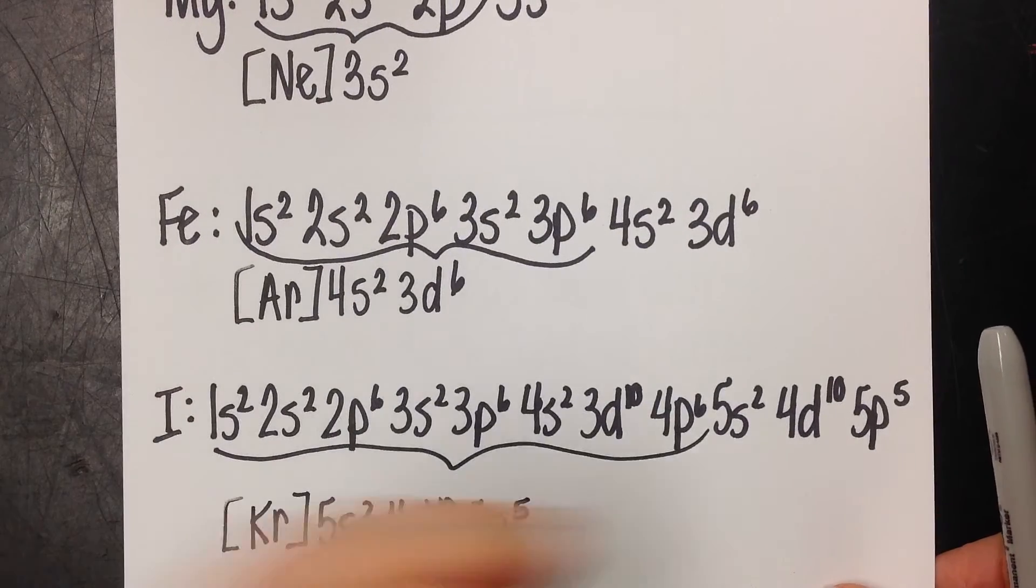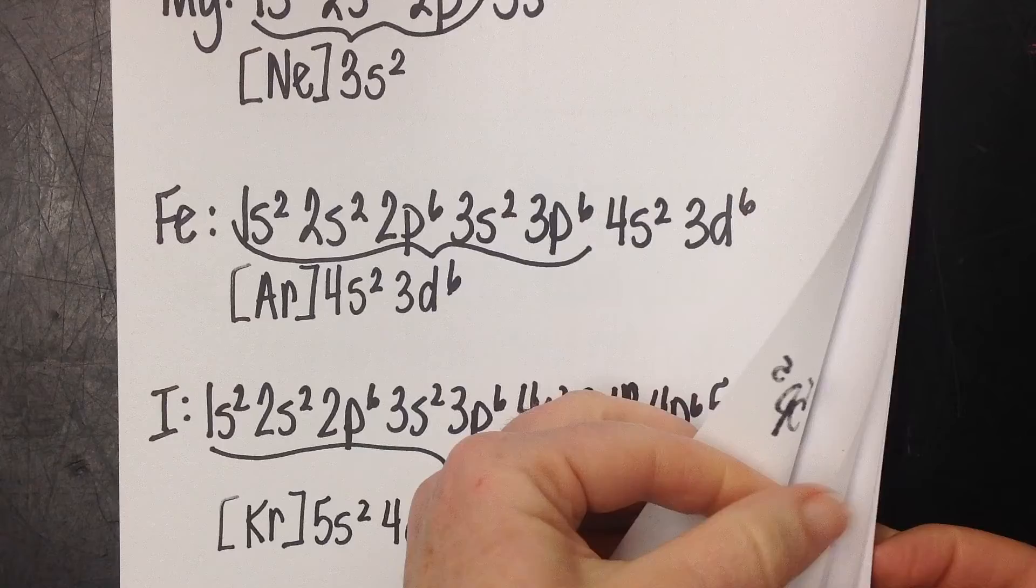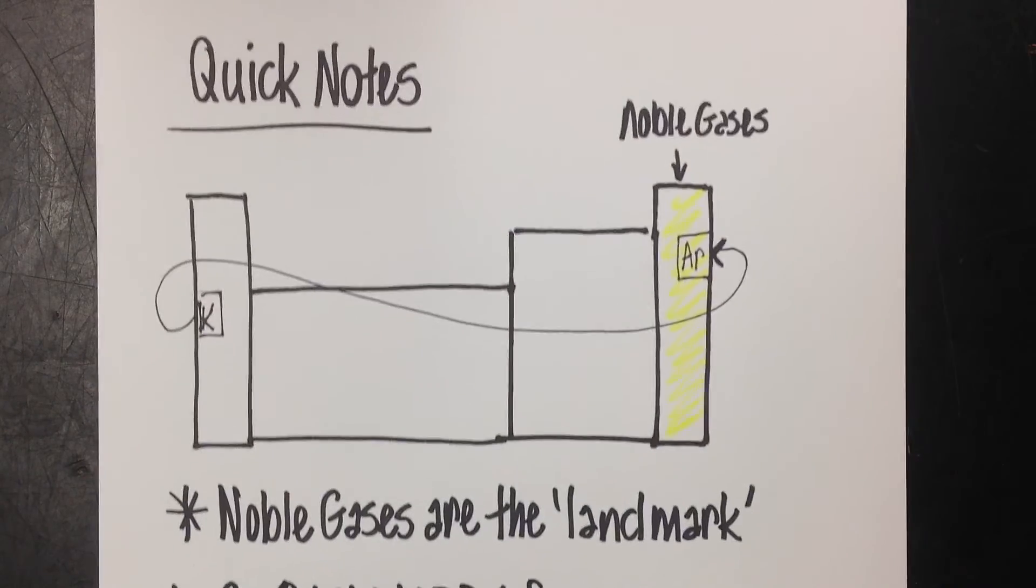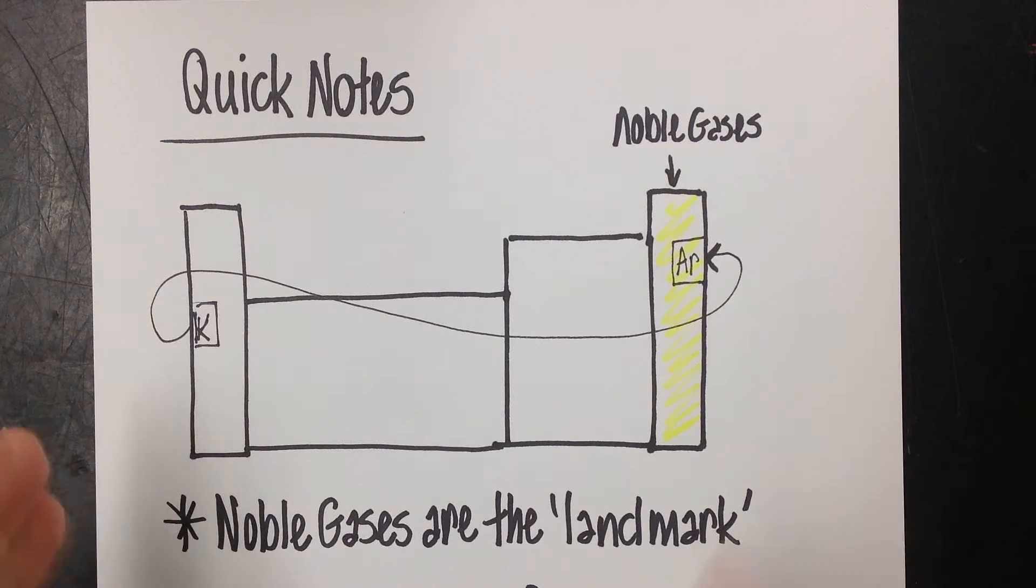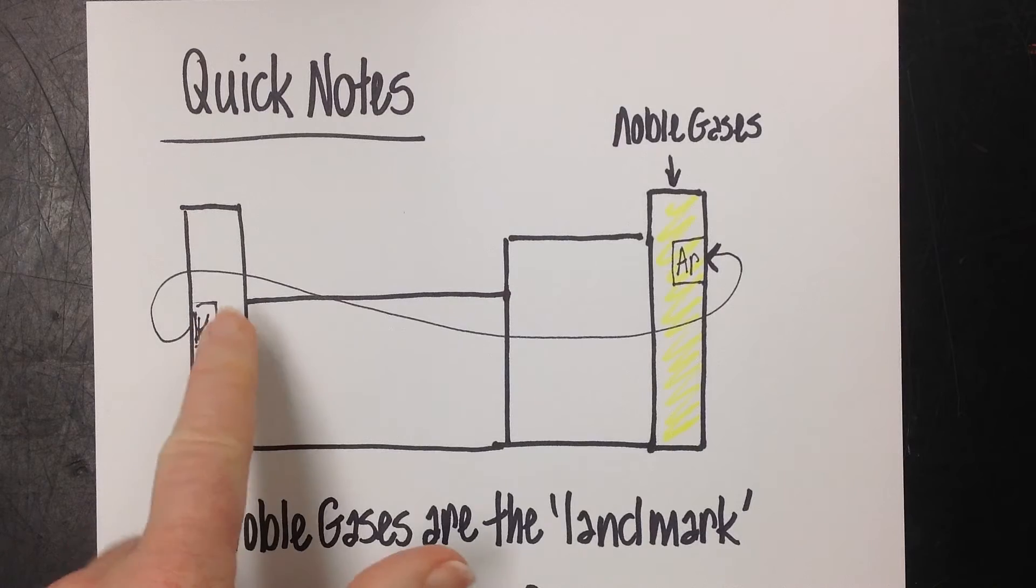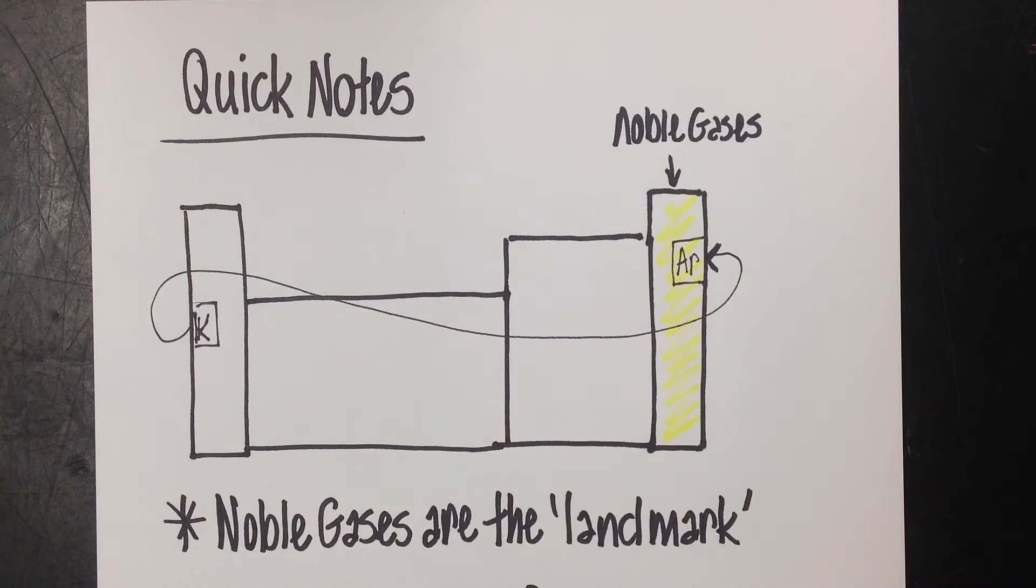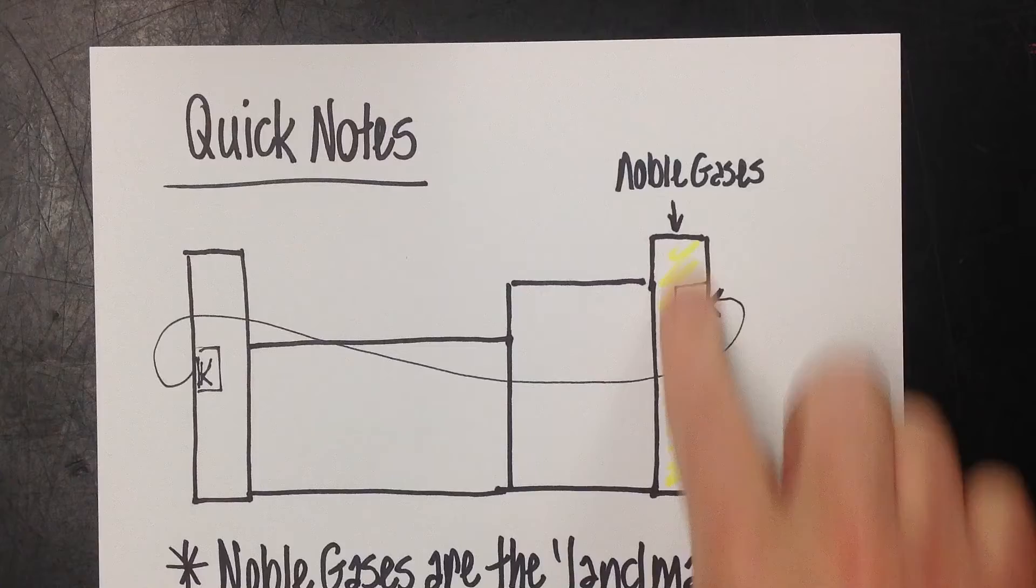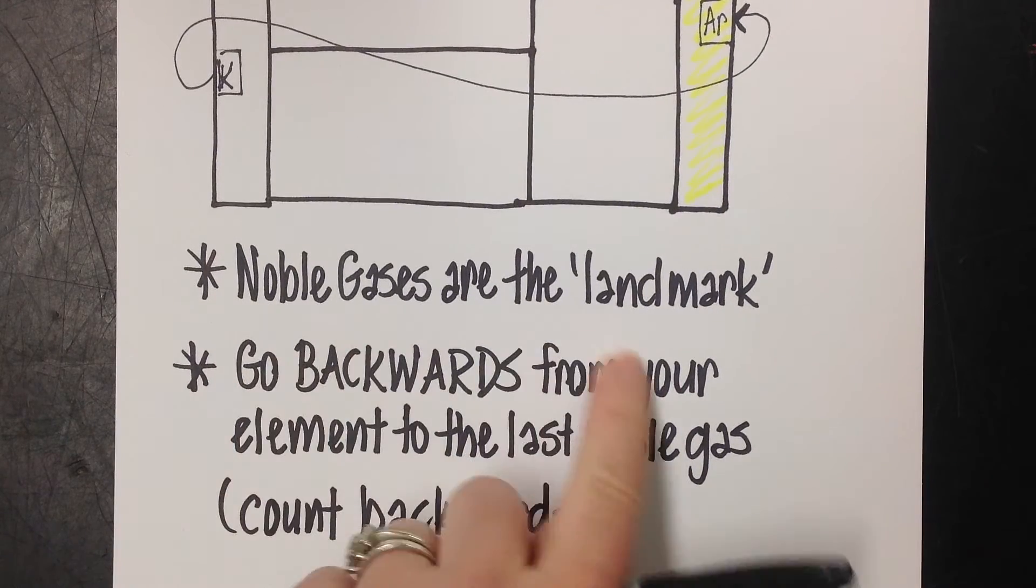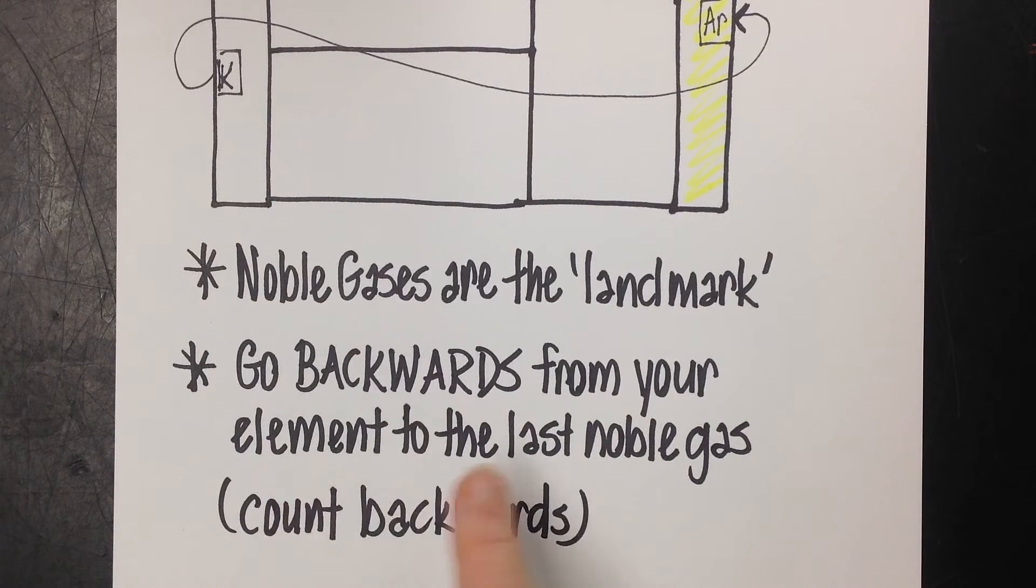That's how you do it. Easy. A few quick notes. When you're looking at a rough sketch of the periodic table, let's say you're at potassium. You count back to the noble gas that came right before it. Noble gases are our landmarks. Go backwards from your element to the last noble gas. You're just counting backwards. That's how you do noble gas configuration.